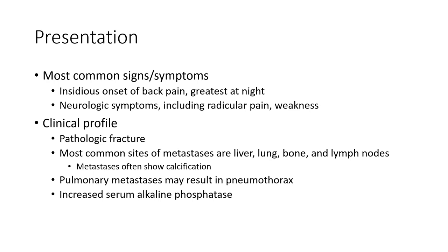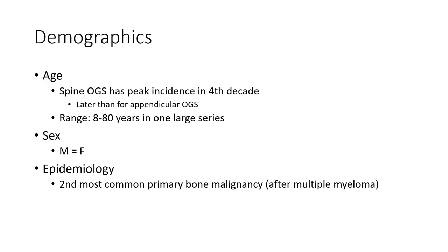Most common signs and symptoms include back pain, neurologic symptoms including radicular pain, weakness, pathologic fracture. Most common sites of metastasis are liver, lung, and bone. Lung metastasis often shows calcification. Pulmonary metastasis may result in hemoptysis. Increased serum alkaline phosphatase.